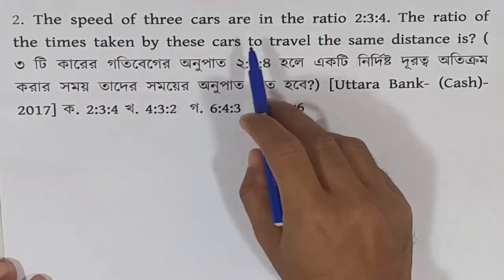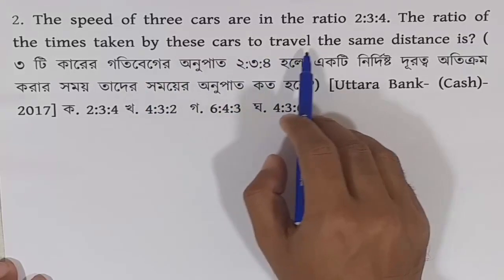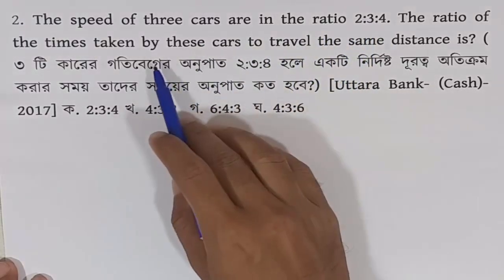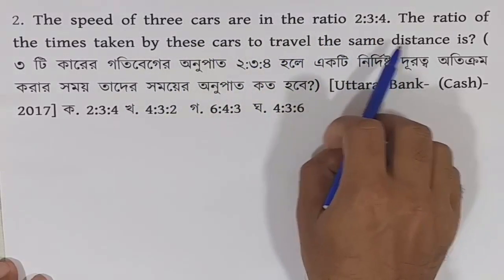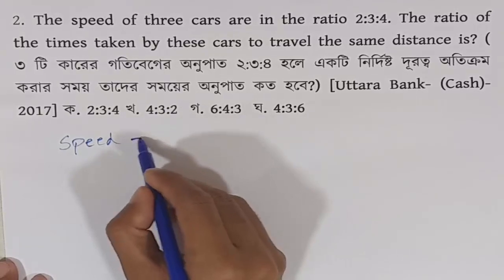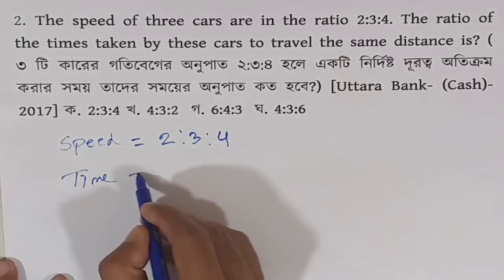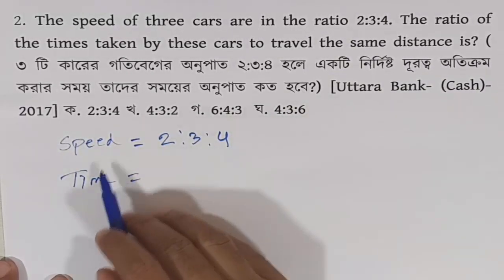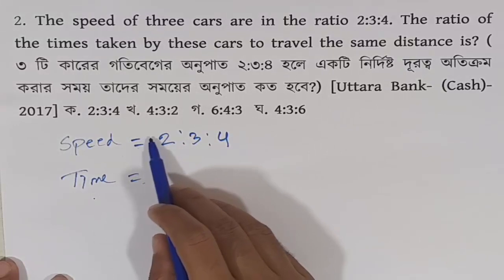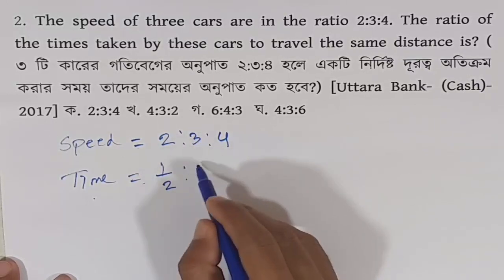Problem 2: The speeds of 3 cars are in the ratio of 2 to 3 to 4. The ratio of the times taken by these cars to travel the same distance is? Since they travel the same distance and speed is in ratio 2 to 3 to 4, time is inversely proportional to speed. So the time ratio is the inverse: 1/2 to 1/3 to 1/4.